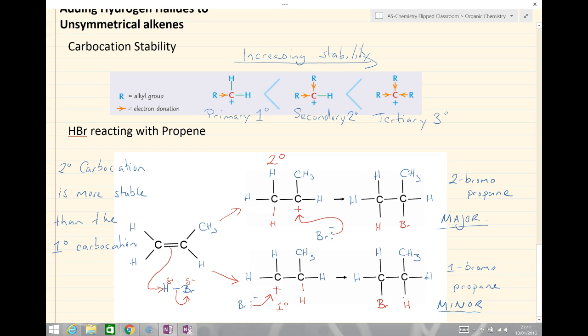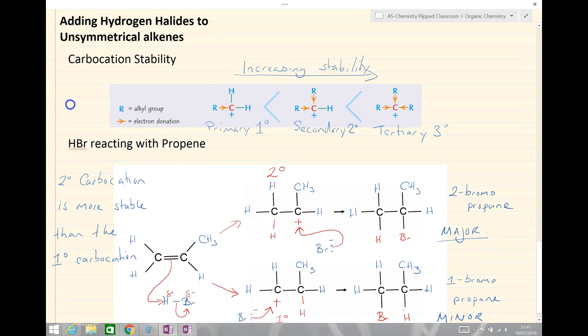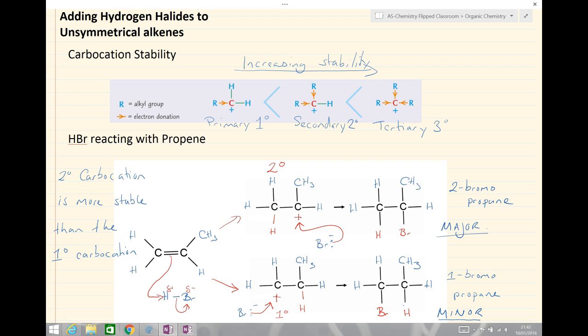Now, this we would observe occurring with HBr and we could also observe it happen with sulfuric acid to make the alcohol where the same unsymmetrical alkene situation would occur. It doesn't happen when we've got something like Br2 as an electrophile, bromine on its own, and that's because if you have two bromine atoms at either end of our electrophile, with a dibromo instance where you've got Br2, you don't get a major minor product because they end up looking like exactly the same thing.